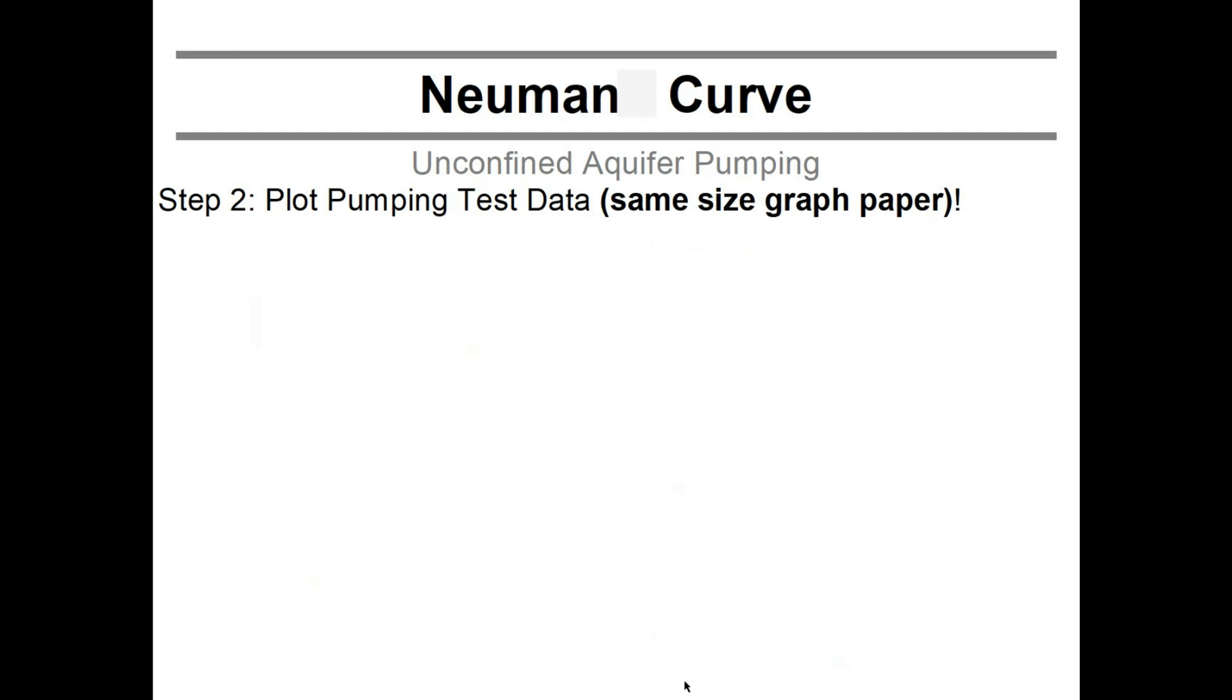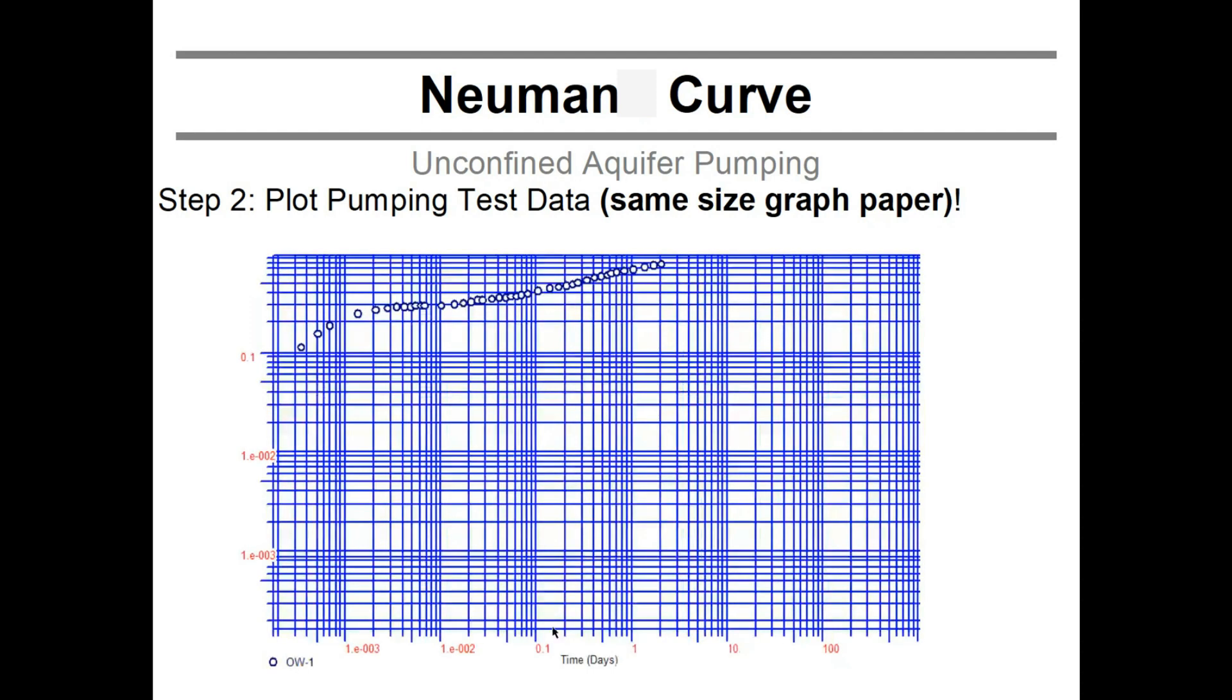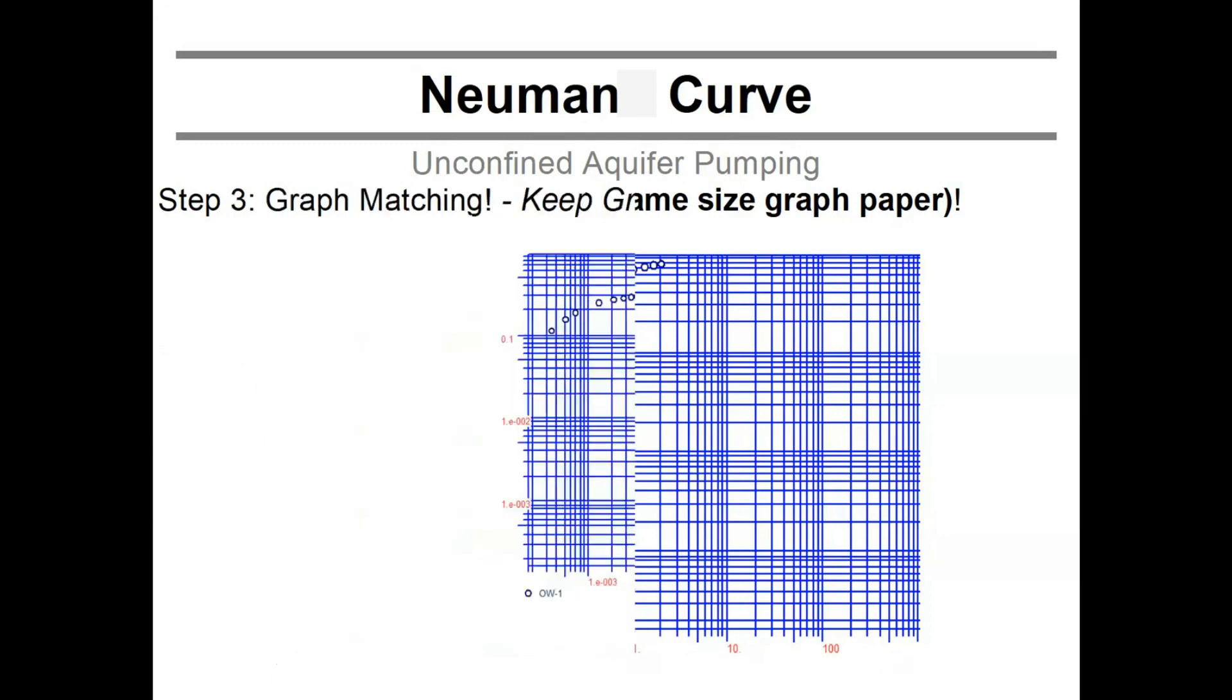Now you need to use exactly the same size graph paper and plot your pumping test data. Something like that. So I've prepared the graph paper, supposed to be the same, observation well one, OW, and this is all the data I get. And you can see there is that curve part, and then it's somewhat flat, and then there is another curve part. So you must make sure that these two fit in the same graph paper.